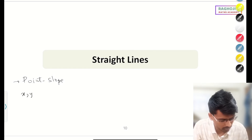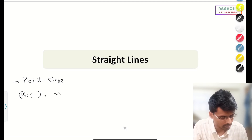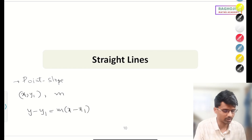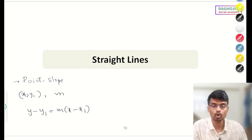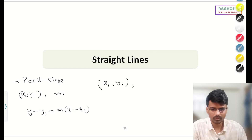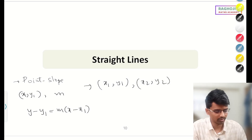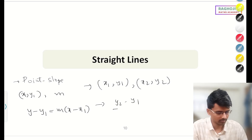...one point (x₁, y₁) is known along with the slope, the equation of the line is: y − y₁ = m(x − x₁). I hope you remember this formula. And one more formula you need to know is how to find the slope when two points are given — (x₁, y₁) and (x₂, y₂). The slope formula is (y₂ − y₁) / (x₂ − x₁).